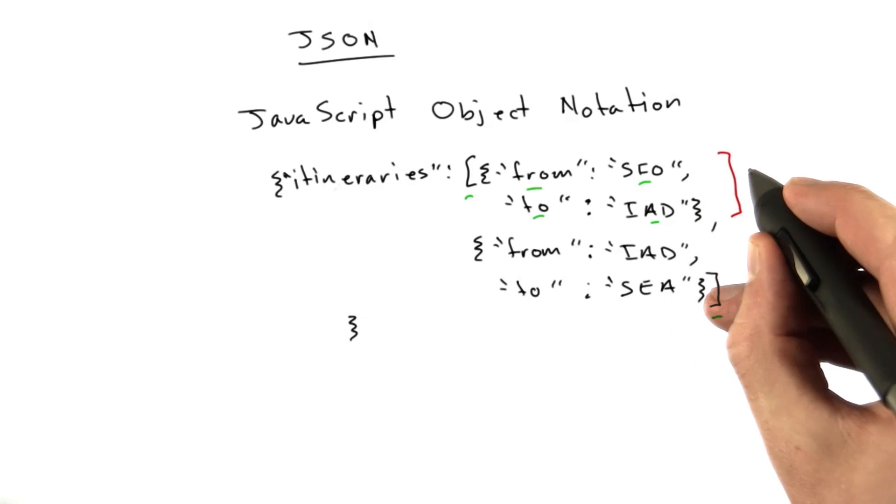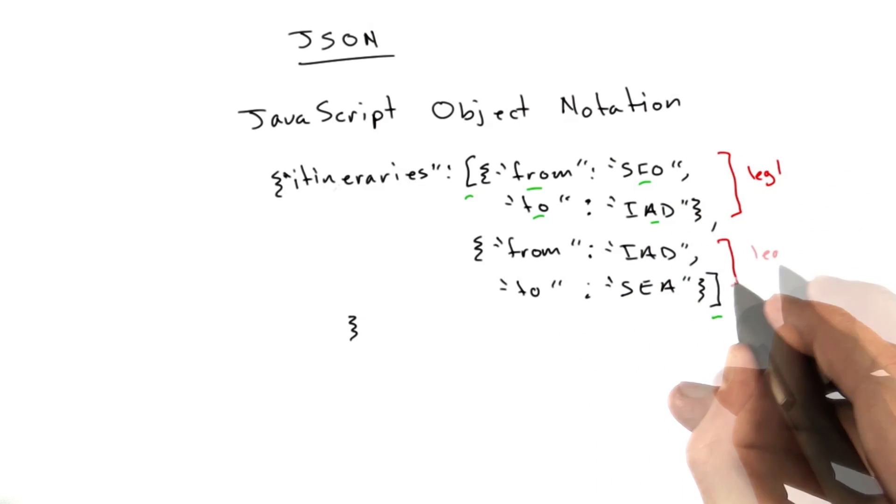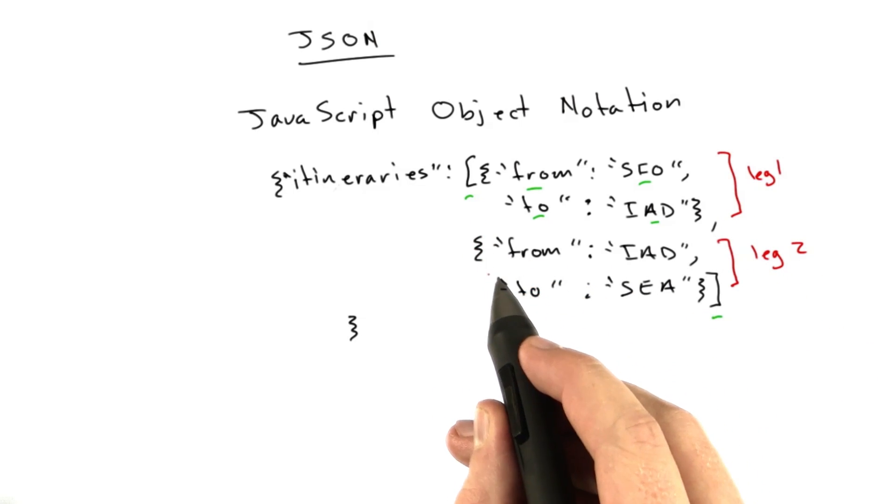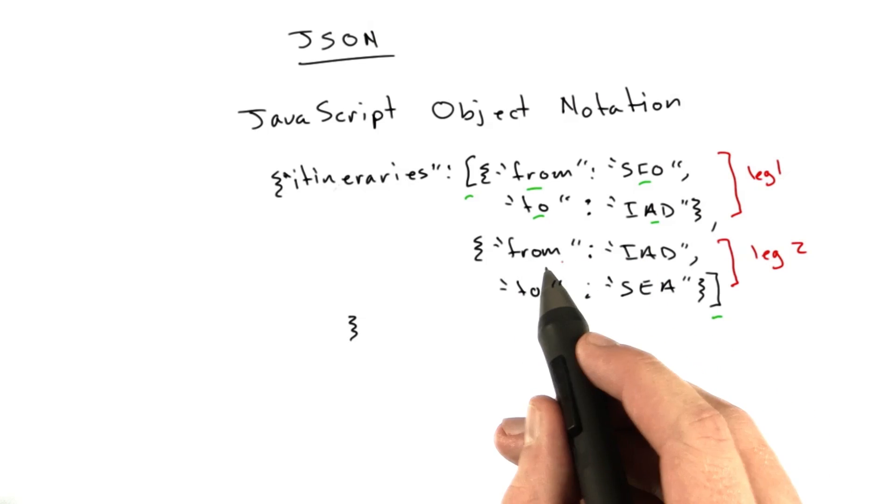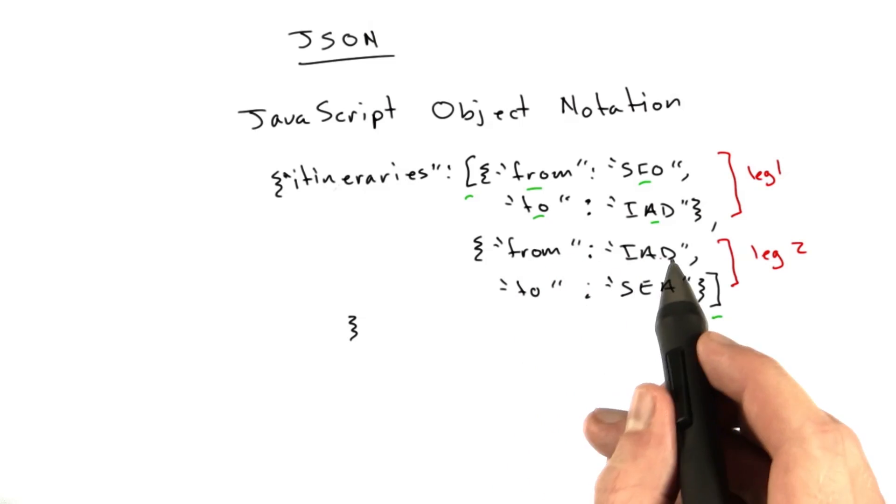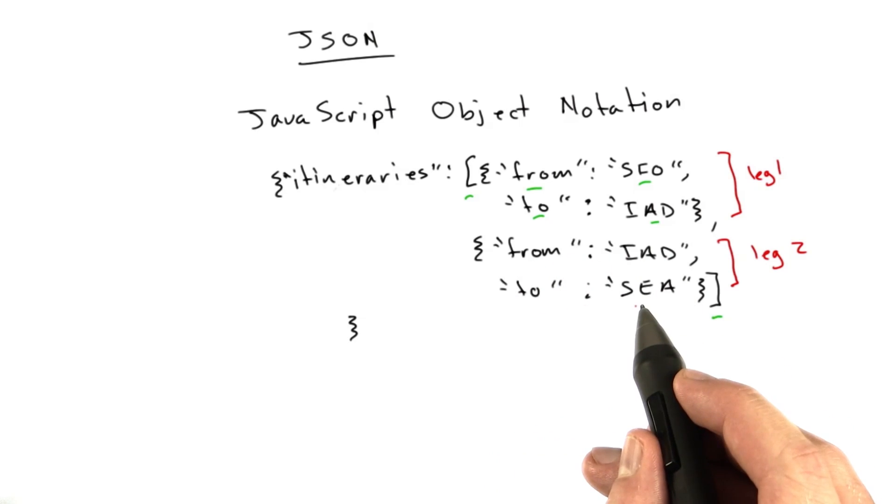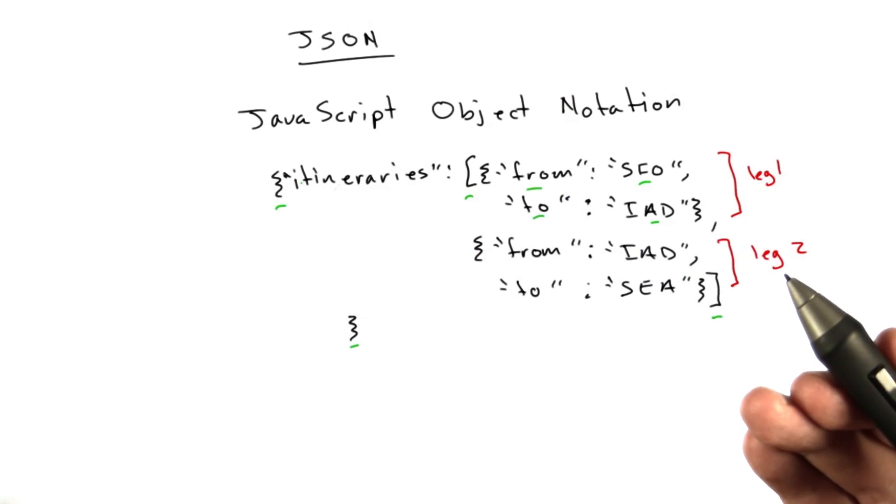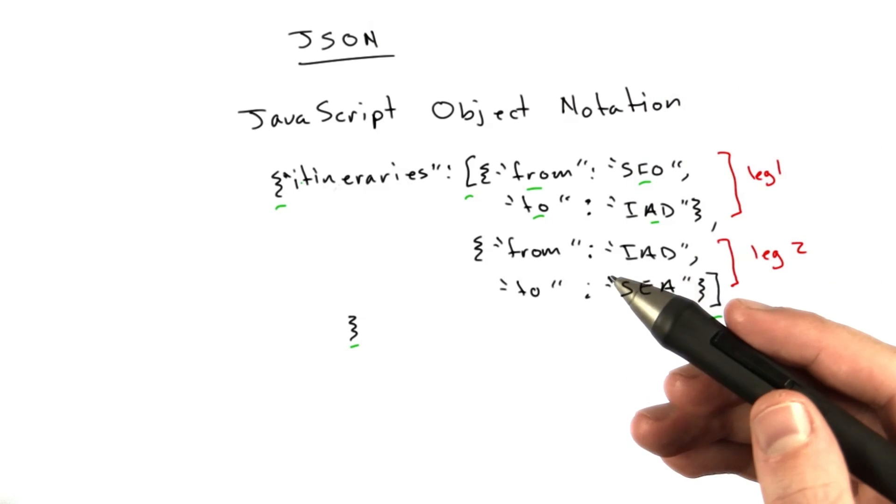This might be leg 1 and this might be leg 2. You can see leg 2 is also made up of another dictionary which is what we use the curly braces for, which has a couple key value pairs of its own: key from value IAD and key to value SEA. Then we can close our list and close this dictionary. JSON is really handy for expressing these types of objects.